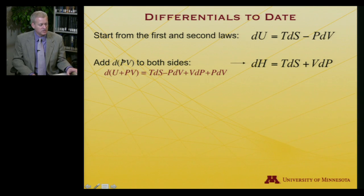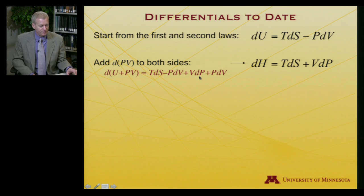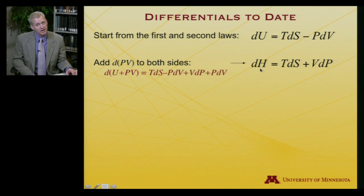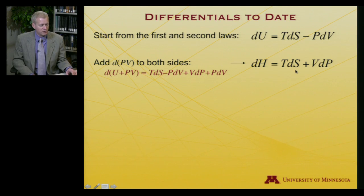Let's add the differential of PV to both sides. If I do that, I get the differential of U plus PV, so I'll need to add VdP and PdV. U plus PV is H, so on the left-hand side I've got dH. The minus PdV cancels with plus PdV, and I'm just left with dH equals TdS plus VdP. That's pretty simple.